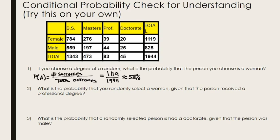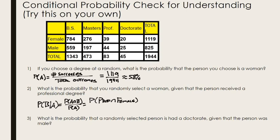The next question: what's the probability that you randomly select a woman given that the person received a professional degree? Using our formula, P(B given A) equals P(A and B) divided by P(A). We're looking at the probability that the person has a professional degree and is female, divided by the probability that the person has a professional degree. Given that the person received a professional degree — that's our condition — that's what goes in the denominator.